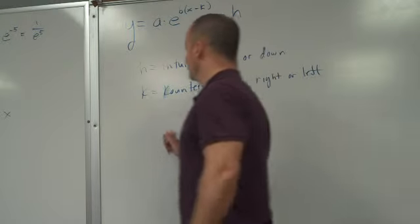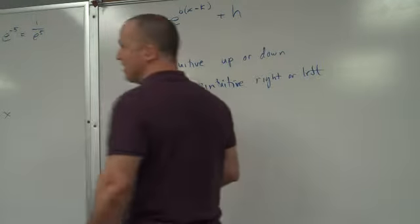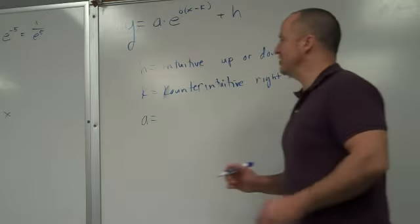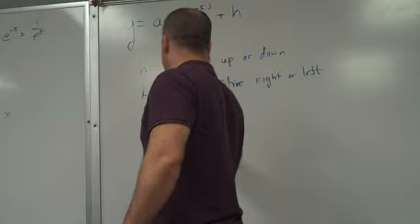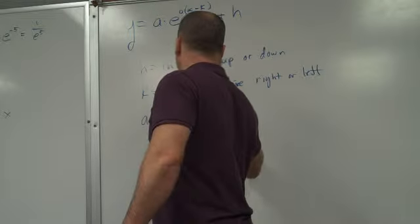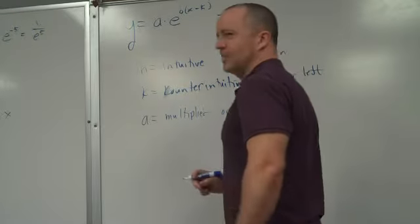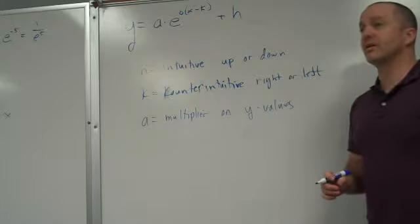And also, A is like the slope thing. A was a thing that's kind of like slope. I started that way. But then I made it fancier. Then I changed that to multiplier on y values.